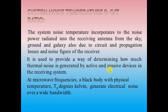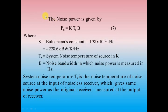To determine the system noise temperature, there are certain active as well as passive devices in the receiver system. At microwave frequency, a black body with a physical temperature TP in Kelvin generates electrical noise over a wide bandwidth. The system noise power PN is represented by N equal to K times TS times B, where K is Boltzmann's constant with a value of 1.38 times 10 to the power minus 23 joules per Kelvin.